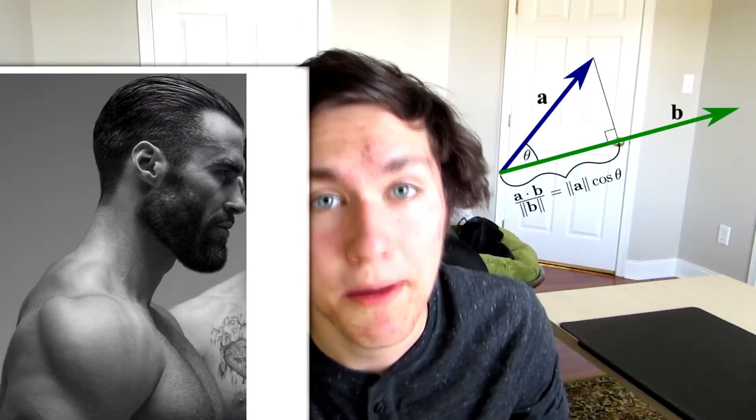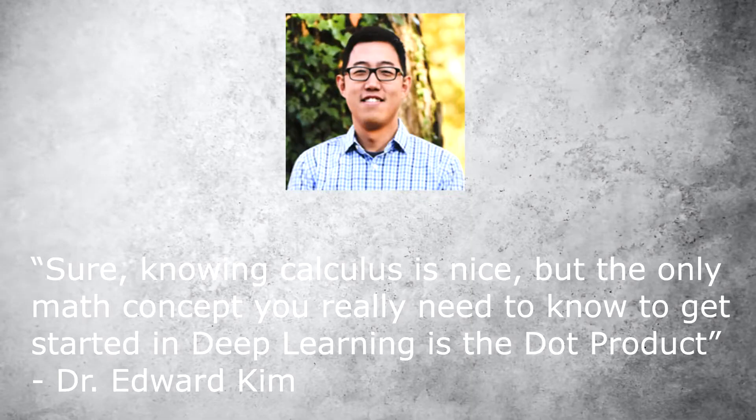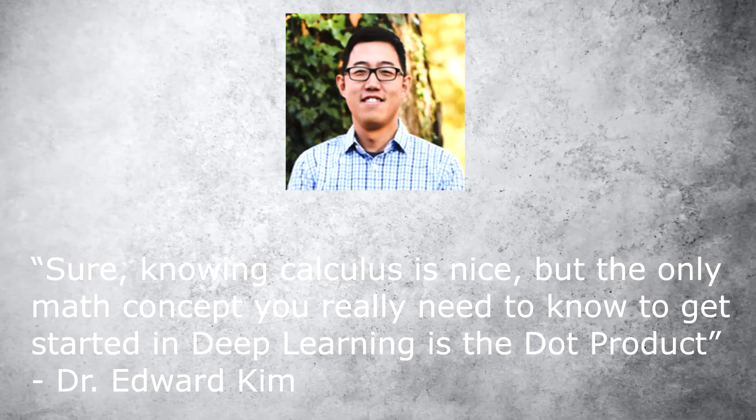The number one most important mathematical concept for understanding neural networks and all of deep learning is the dot product. Quoting a computer science professor I recently spoke to, sure, knowing calculus is nice, but the only math concept you need to know to get started in deep learning is the dot product.